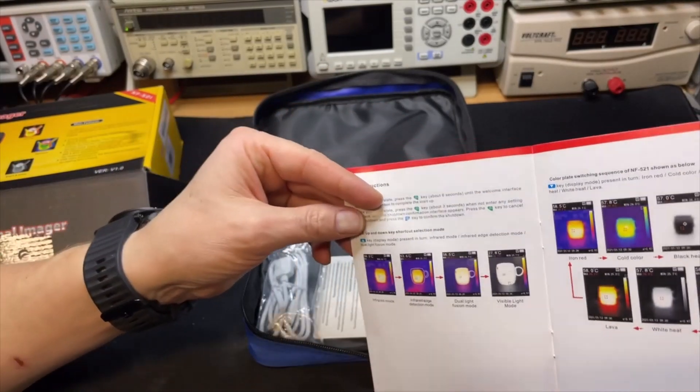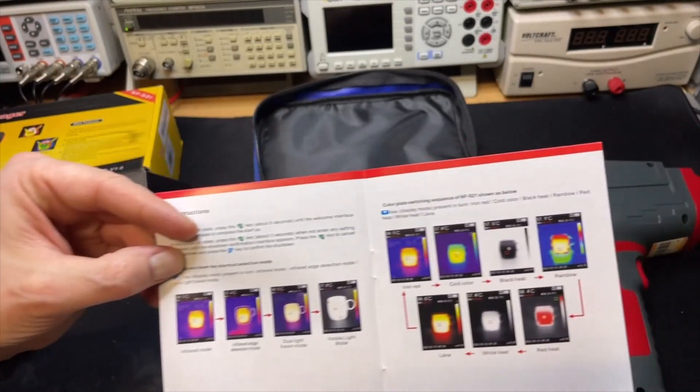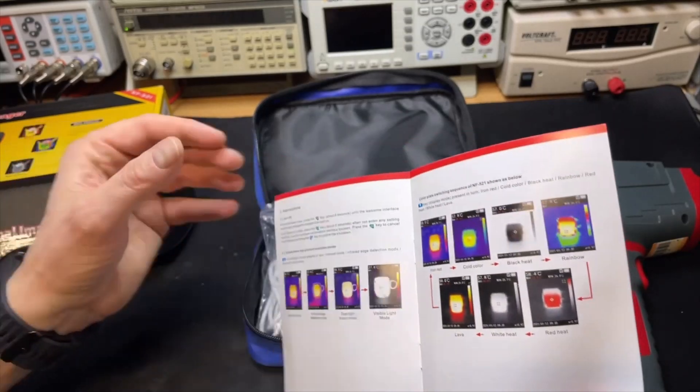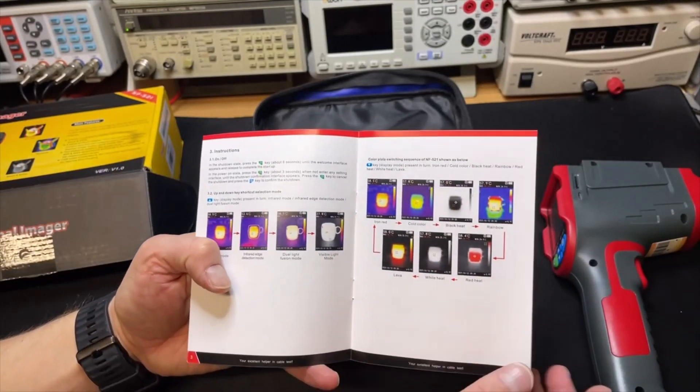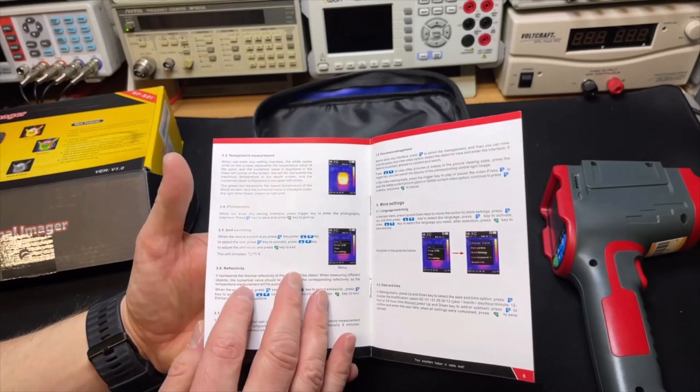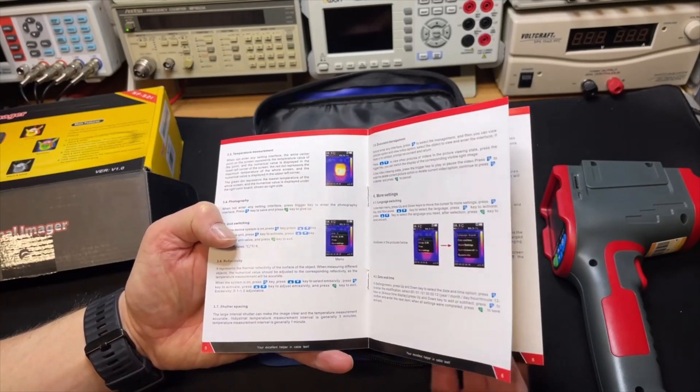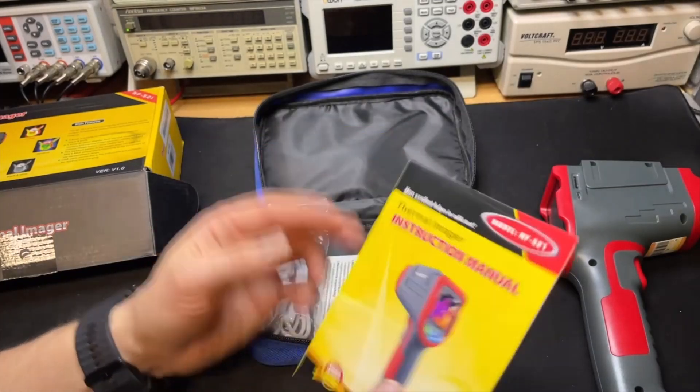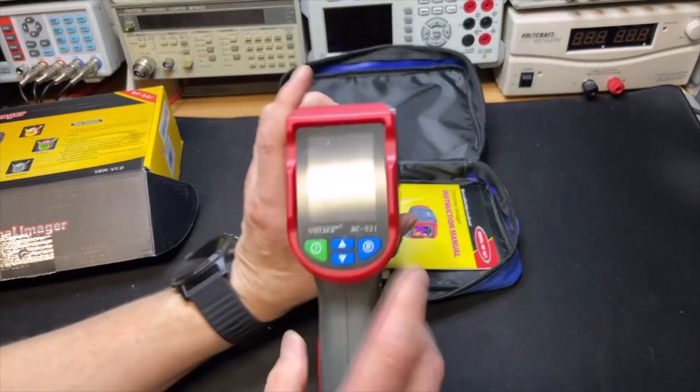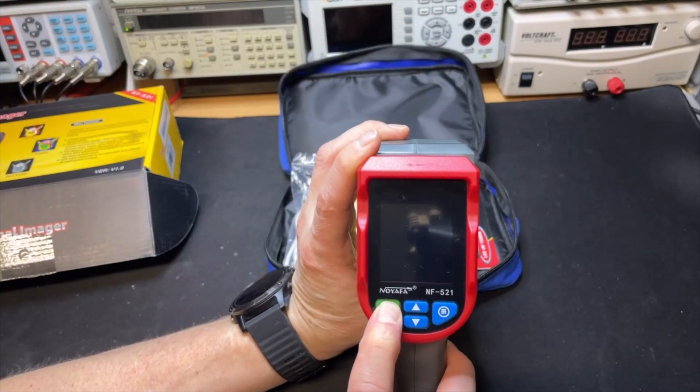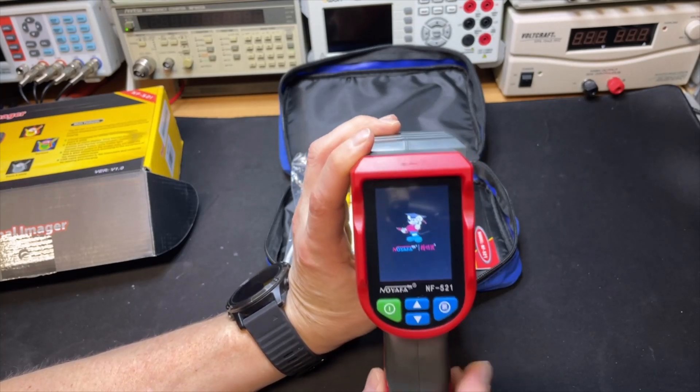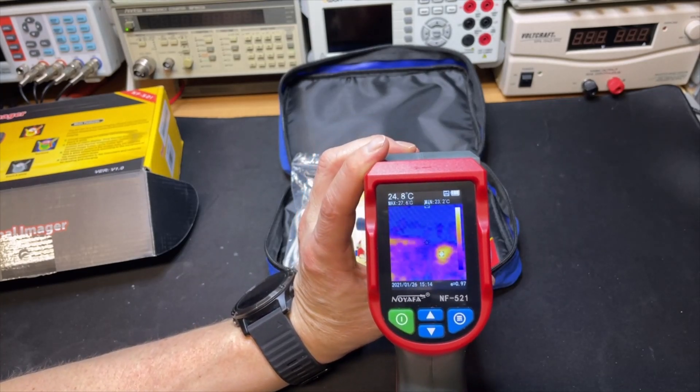All the types of pictures you can do. You can do only thermo and you can also combine the thermo with the visual. Let's just switch it on, probably this green button. Here it is, okay.